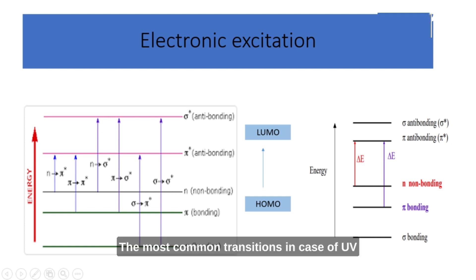The most common transitions in case of UV visible spectroscopy are pi to pi star transition. This transition involves the excitation of an electron from a bonding pi orbital to an anti-bonding pi star orbital. It is often observed in molecules containing conjugated systems, such as double bonds or aromatic rings. This pi to pi star transition typically occurs in the UV region of the electromagnetic spectrum.